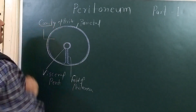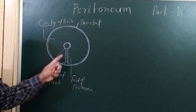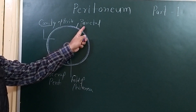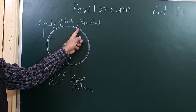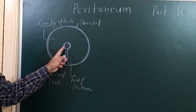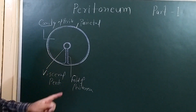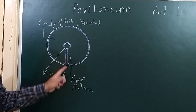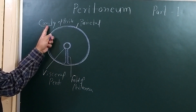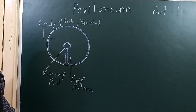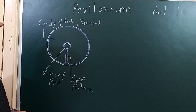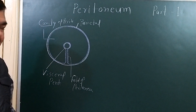So here you are seeing four things: one is parietal peritoneum, second is visceral peritoneum, third is fold of the peritoneum, and fourth is cavity of the peritoneum. We will discuss each one by one.